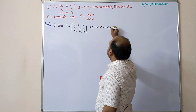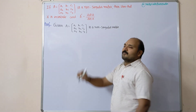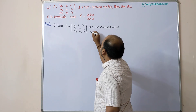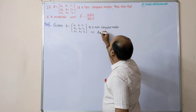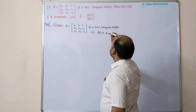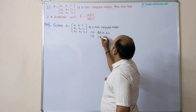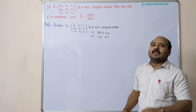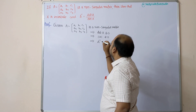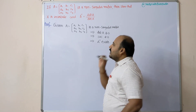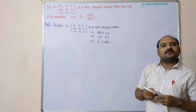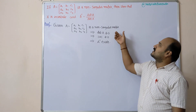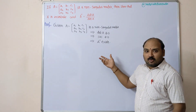One important thing, dear students: a non-singular matrix is one whose determinant is not equal to zero — that is, det A ≠ 0. Whenever the determinant is not equal to zero, the inverse of the matrix will exist — that implies A inverse exists. For this step you get one mark out of seven, because you have to give the proper information.